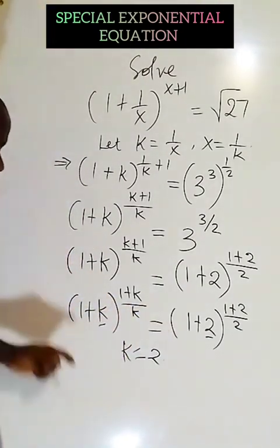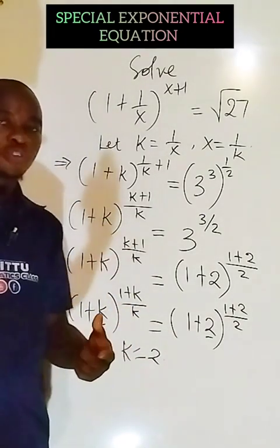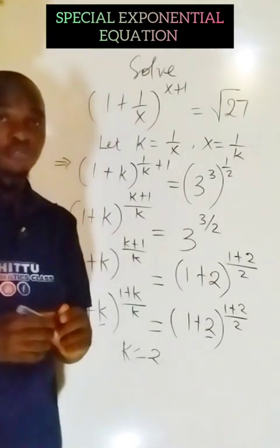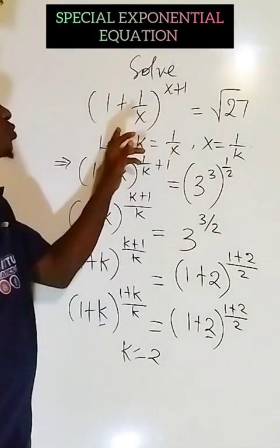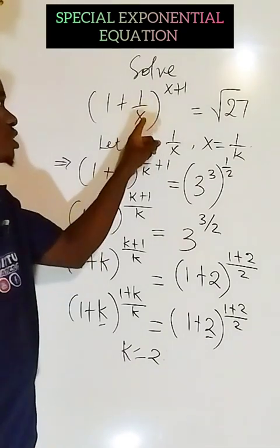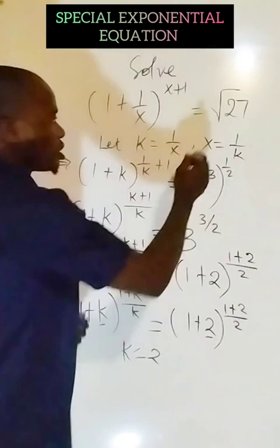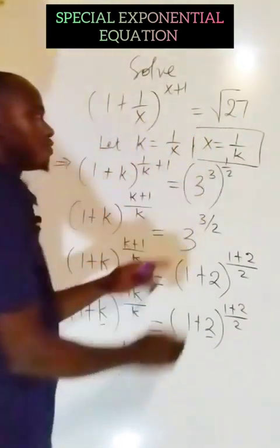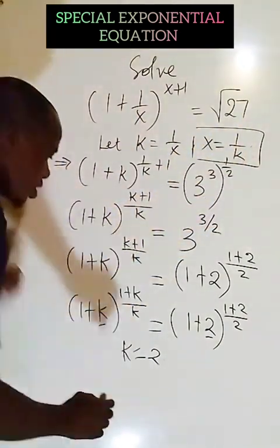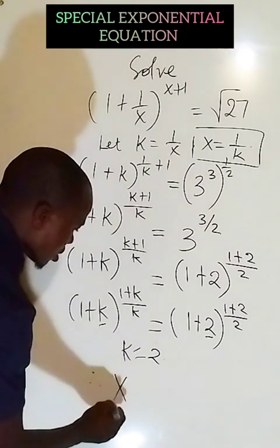So now if k equals to 2, don't forget that we are not actually looking for the value of k, because when you look at the question, the main equation given to us, it is x that is the variable. So therefore, we now come to this side here that is having x to be 1/k.